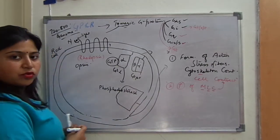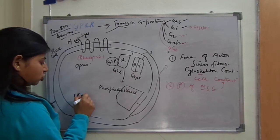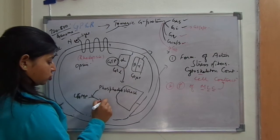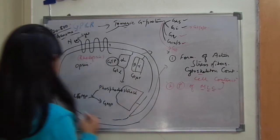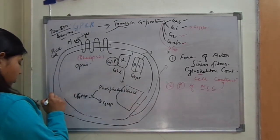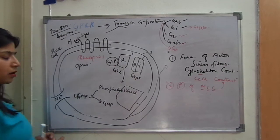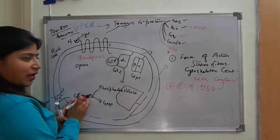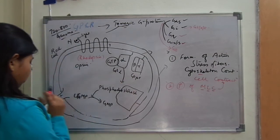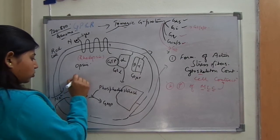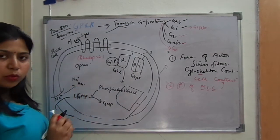The function of phosphodiesterase is to convert cyclic GMP into GMP. Cyclic GMP controls sodium channels inside the cell. If the amount of cyclic GMP is high, the sodium channel remains open. If the sodium channel remains open, there will be sodium influx inside the cell, and sodium influx is responsible for depolarization of the cell.